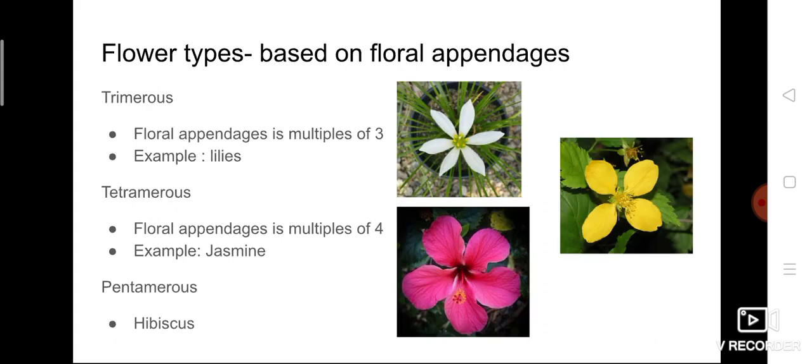Flowers can also be classified based on floral appendages — that is, the number of petals they have. Some flowers are called trimerous if the floral appendages are multiples of three — that is, three, six, nine, twelve, and so on. This type of flower comes under the group trimerous.